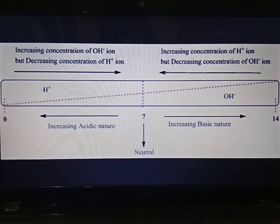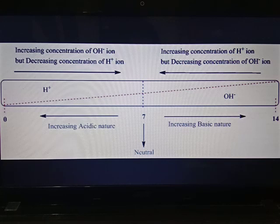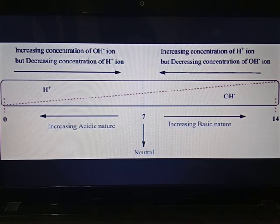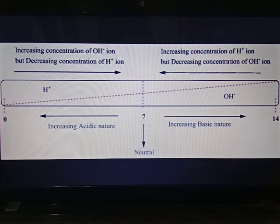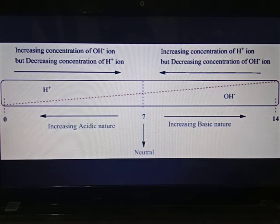Aquatic animals are very sensitive to changes in temperature and pH. Due to acid rain, acid droplets fall into water bodies, decreasing the pH of the water, which can lead to the death of aquatic animals and plants. To convert this acidic water back to neutral, we can add calcium-based bases such as calcium oxide or calcium hydroxide into the water bodies — not strong bases like KOH — in order to bring its pH back to neutral.